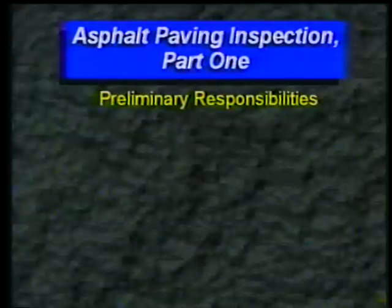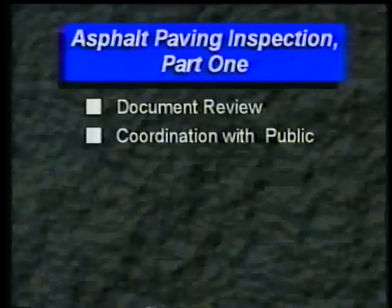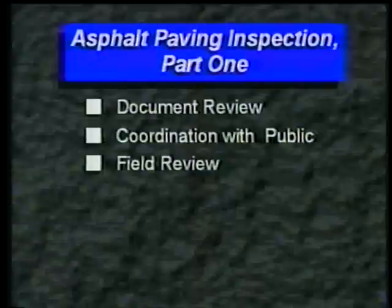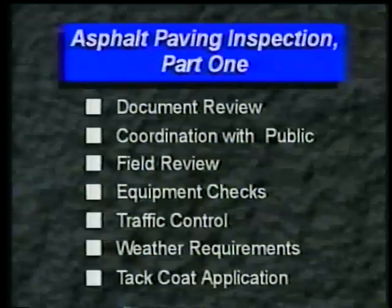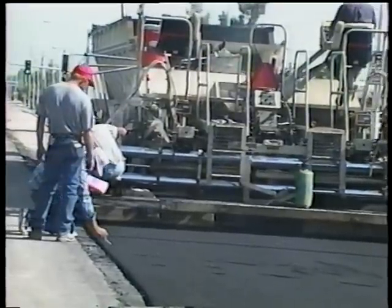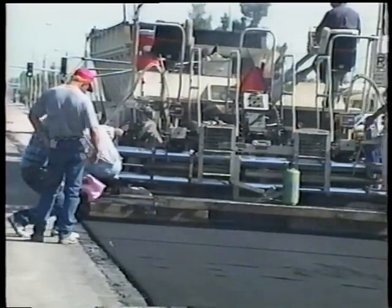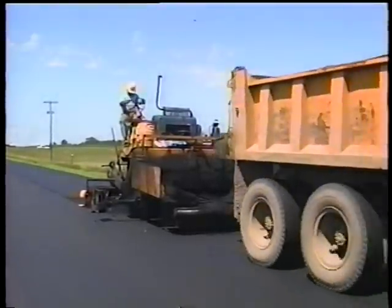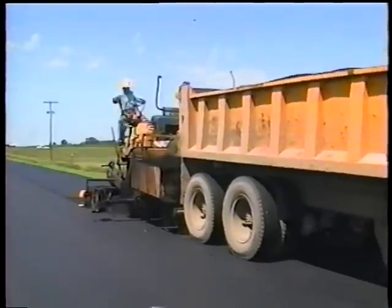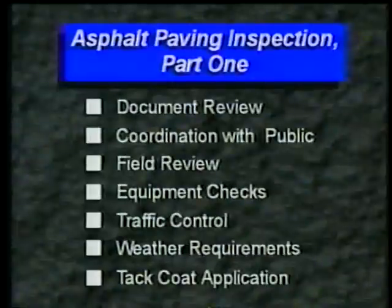Here in part one, we'll look at your responsibilities before paving begins: document review, coordination with the public, field review, equipment checks, traffic control, and weather requirements. Then we'll look at inspecting the tack coat application. Part two covers the paving operation itself. Part three shows some of the problems that can occur with mix quality, lay down operations, and rolling. So let's get started.